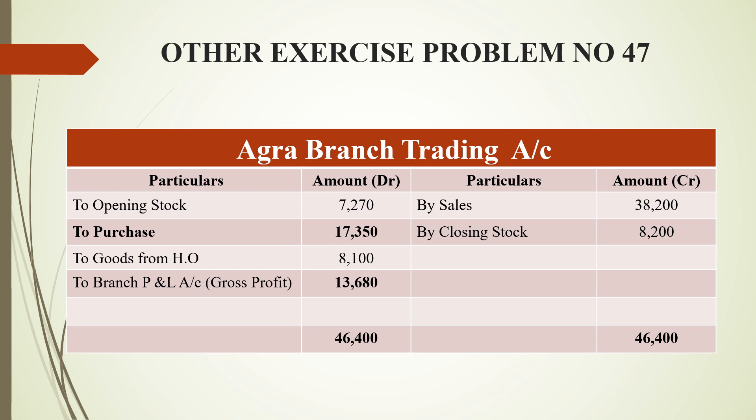Closing stock is placed on the credit side because it is still inside the business without having been sold. After balancing, we get a gross profit figure of 13,680 rupees, which is transferred to the branch profit and loss account. The grand total on both sides of the trading account is 46,400 rupees.